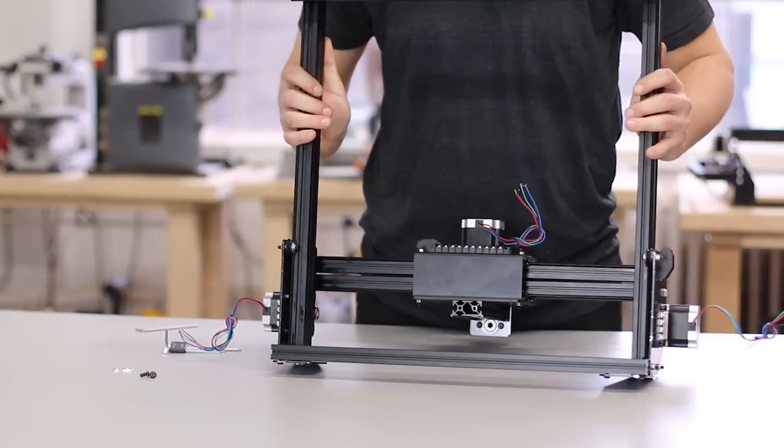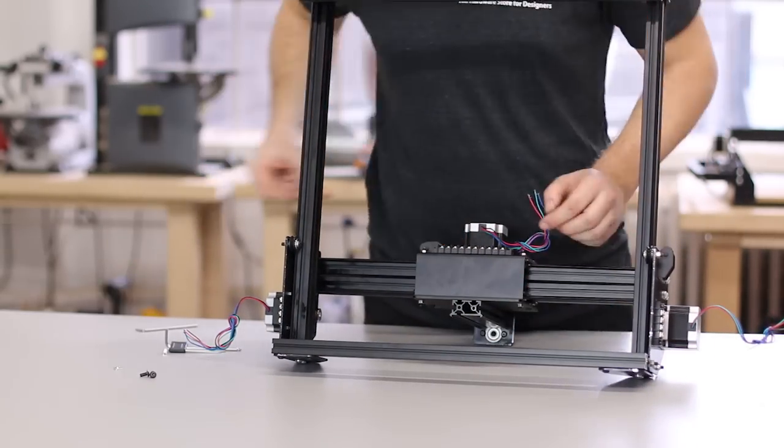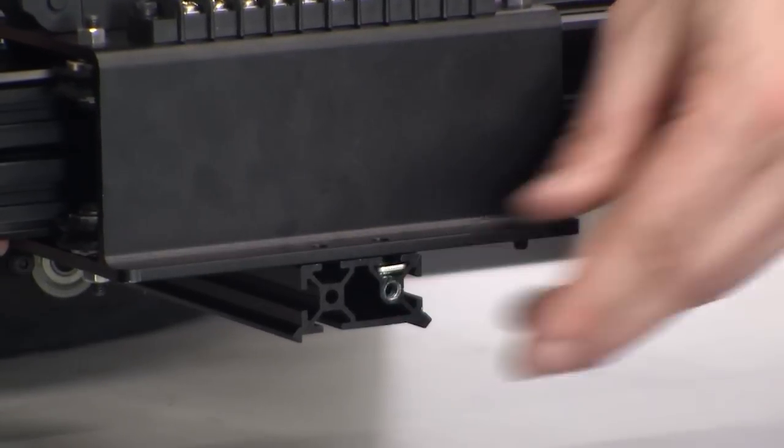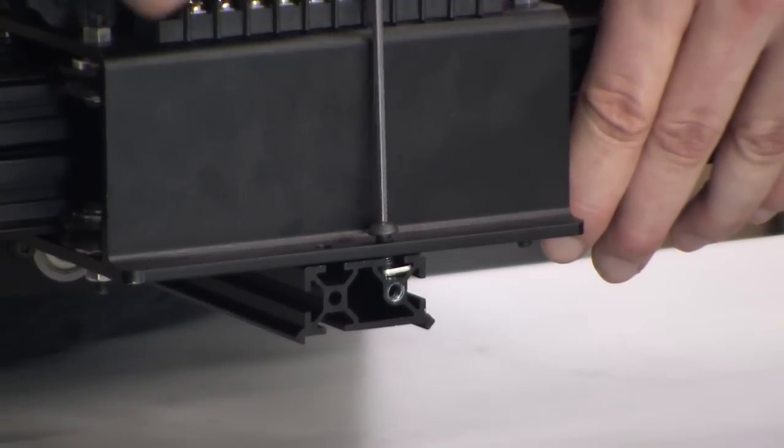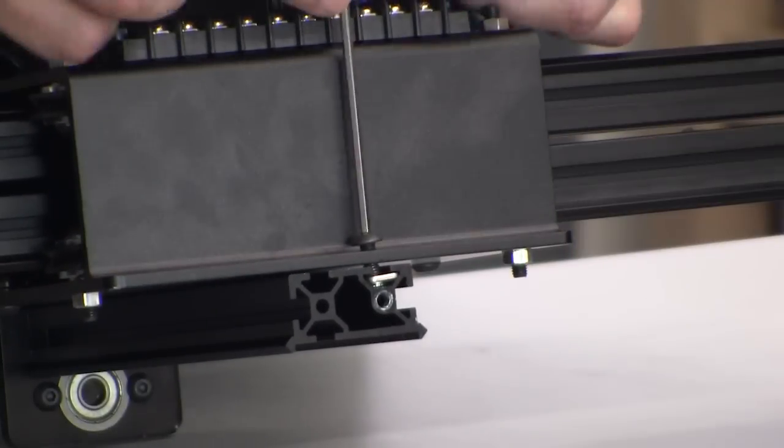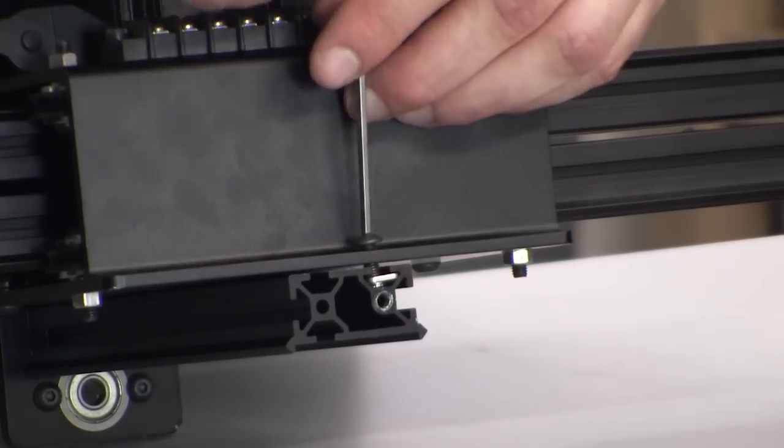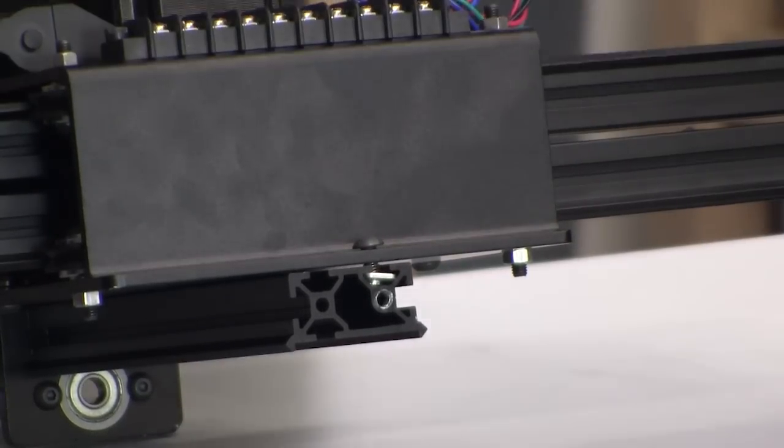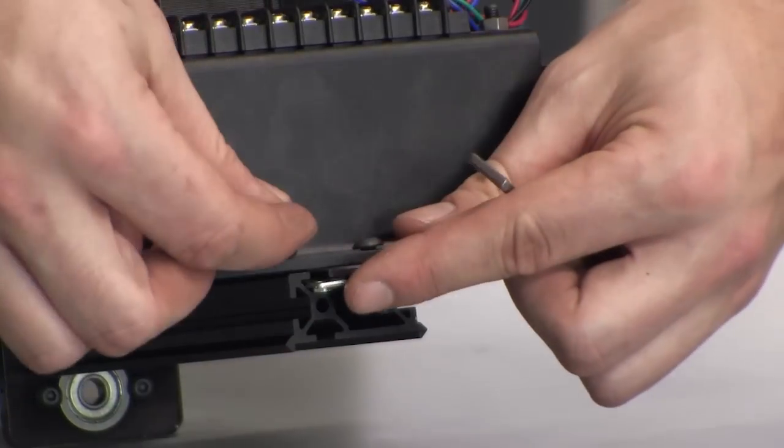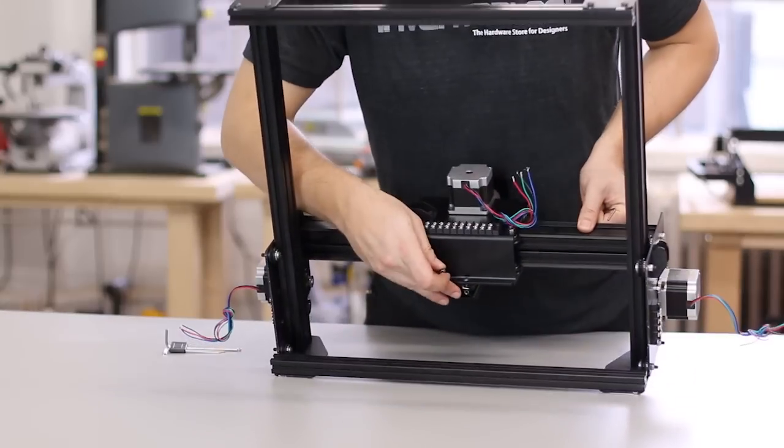Now we'll rock the whole machine onto its back in order to put two more insertion nuts into the bottom of the Z-axis maker slide. Put an insertion nut into each slot in the maker slide, and push a screw through the X-carriage and thread it into the insertion nut.